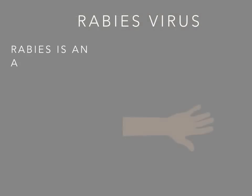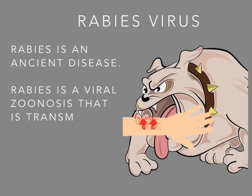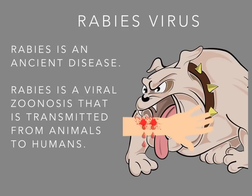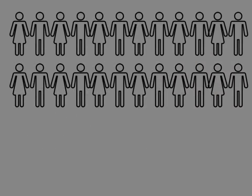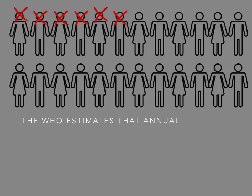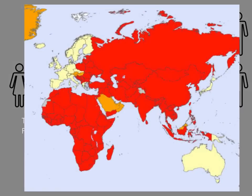The rabies virus is an ancient disease. Rabies is a viral zoonosis that is transmitted from animals to humans. The World Health Organization estimates that annually 60,000 people die worldwide from the rabies virus, predominantly from Asia and Africa, which this map depicts. This map was received from the World Health Organization website.